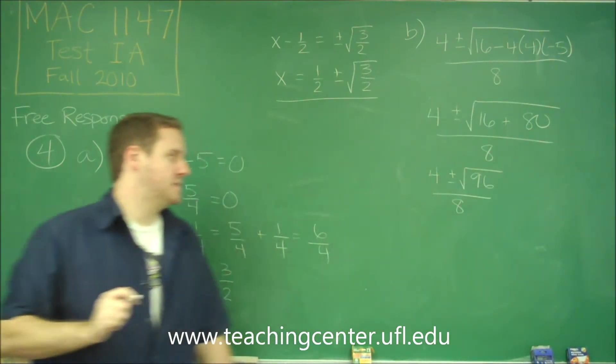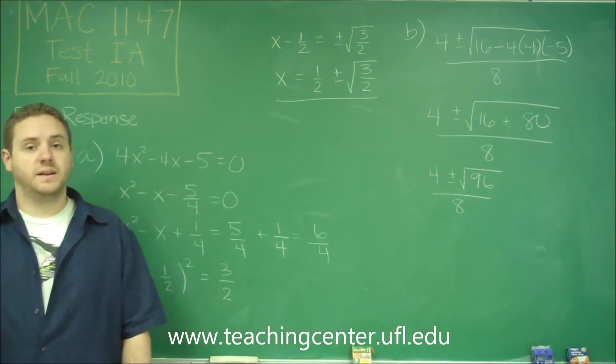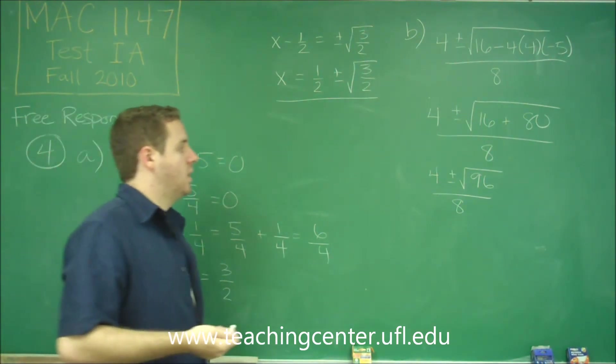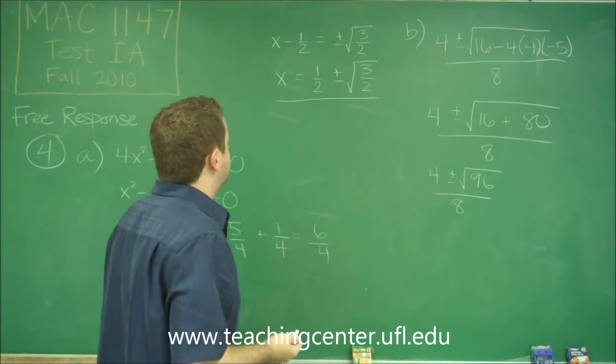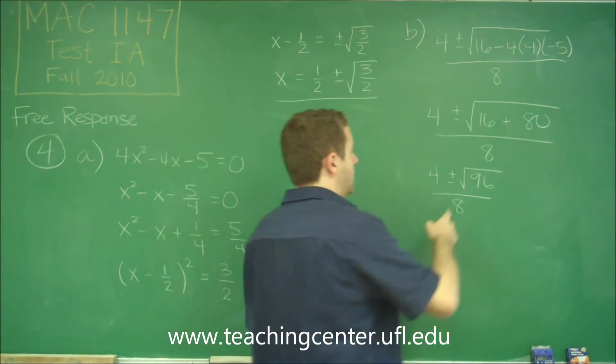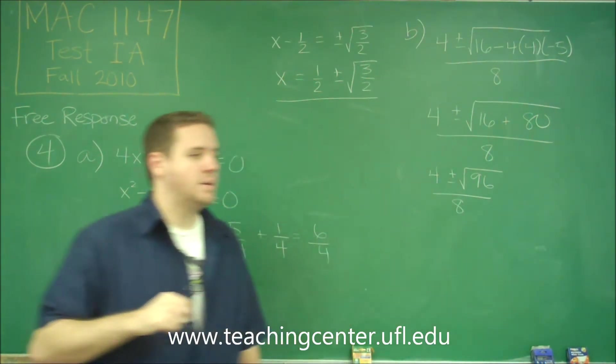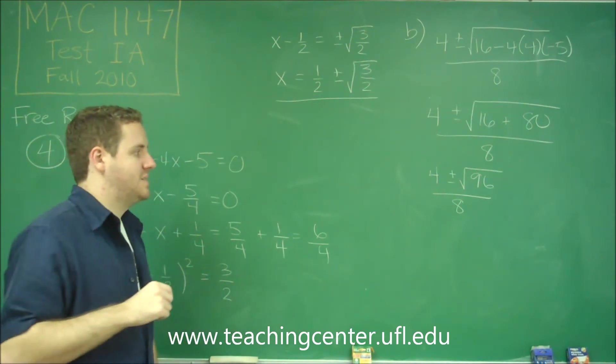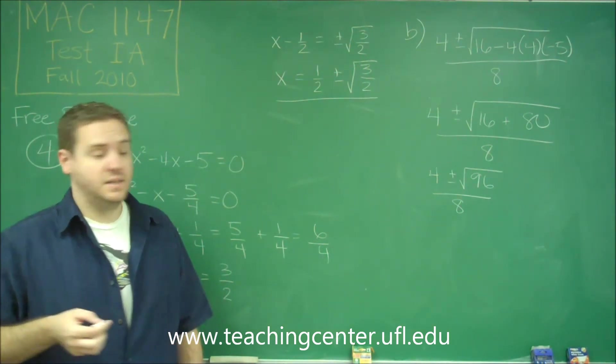4 ± the square root of 96. We need to factor that out somehow. Well, we can do that because 96 can be factored into 16 × 6, and 16 is a perfect square.